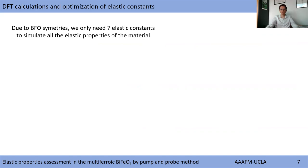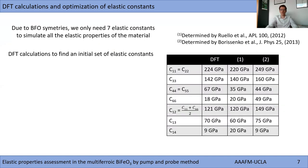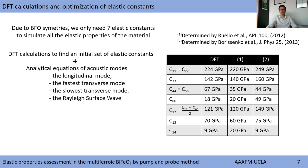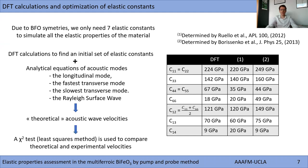Thanks to BFO symmetry, only seven independent elastic constants have to be determined. We are calculating the first set of elastic constants using DFT calculations. This set of constants is then used in the Christoffel equation of acoustic modes. We can thus determine with the Christoffel equations four theoretical velocities: the longitudinal mode, the fastest transverse mode, the slowest transverse mode, and the Rayleigh surface mode. The values of the elastic constants are optimized by minimizing the difference between the experimental and theoretical velocities.